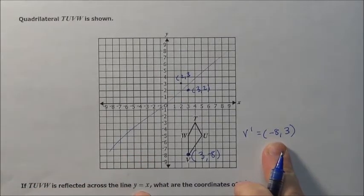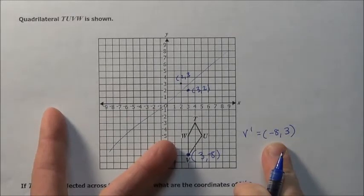Whenever we reflect across the line Y equals X, our X and Y values simply flip.